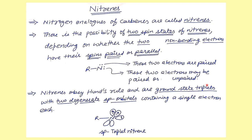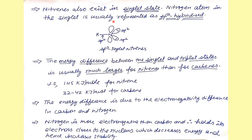In the triplet ground state, nitrenes have degenerate sp orbitals, each containing one unpaired electron with the same spin. Nitrenes can also exist in the singlet state. In the singlet state, the hybridization is sp2, the geometry is planar with a bond angle of 120 degrees.